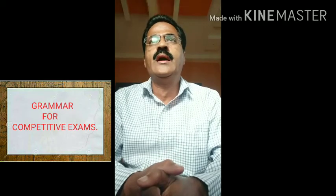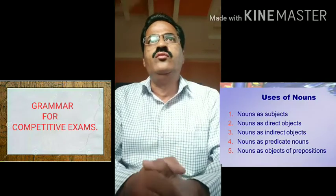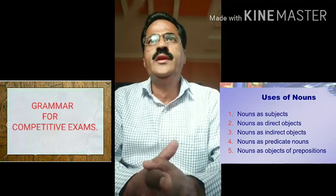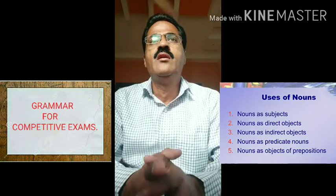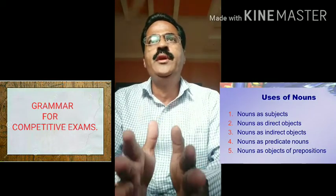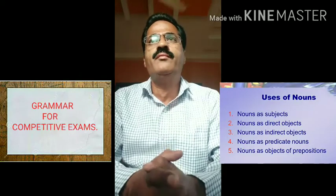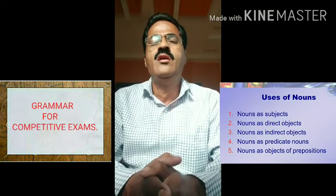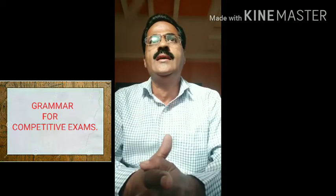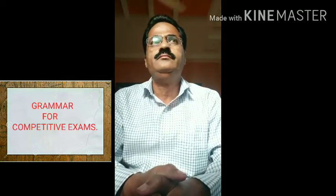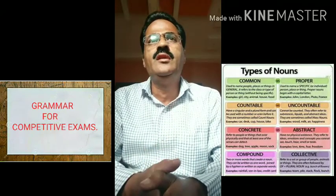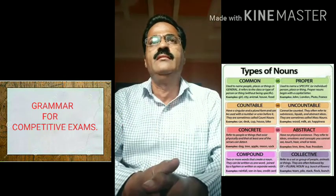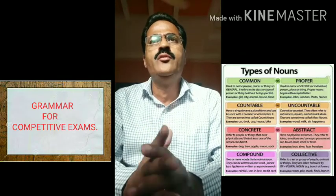The second important grammar tip is usage of nouns. A noun is a word that represents a person, a place, or a thing. A noun may be used as a subject of a sentence, as a direct object, as an indirect object, or as the object of a preposition. Nouns can be either singular or plural. Singular means they refer to just one thing, while plural means they refer to more than one.